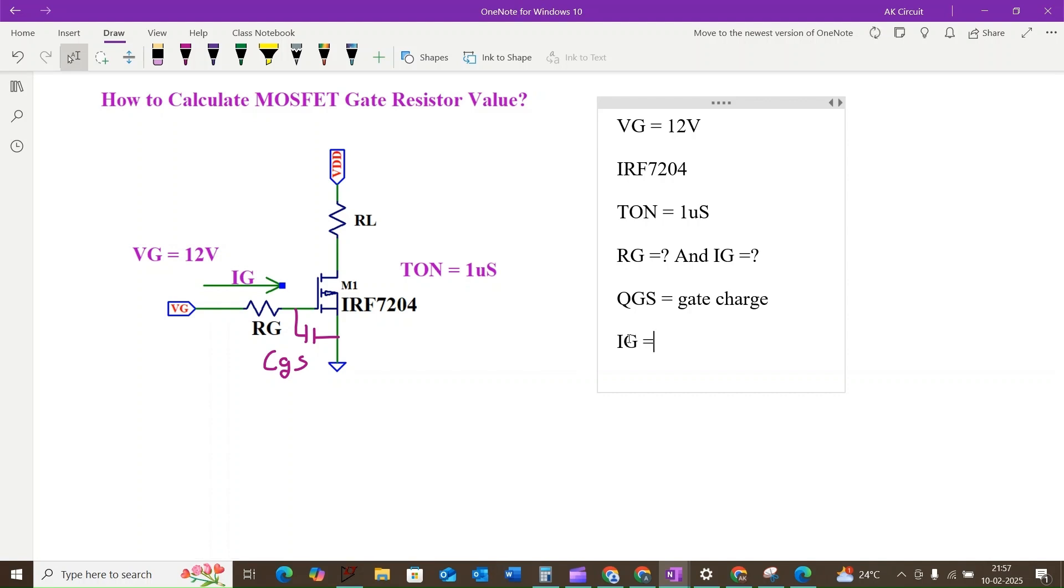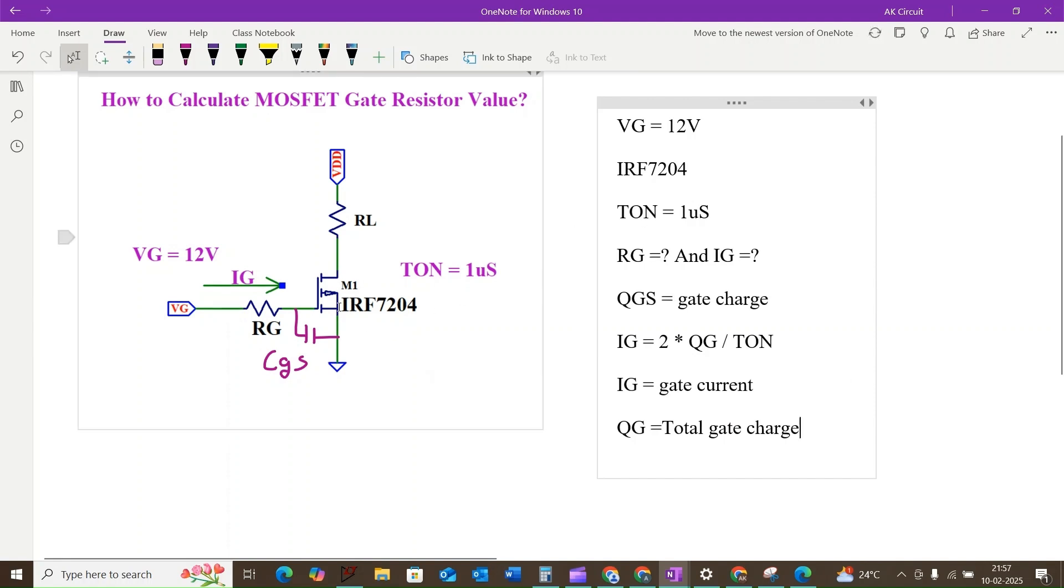The formula to demonstrate gate current IG, which is equal to 2 times QG divided by TON. Here IG will be the gate current and the QG will be the total gate charge. Similarly, TON will be the turn on time of the MOSFET.